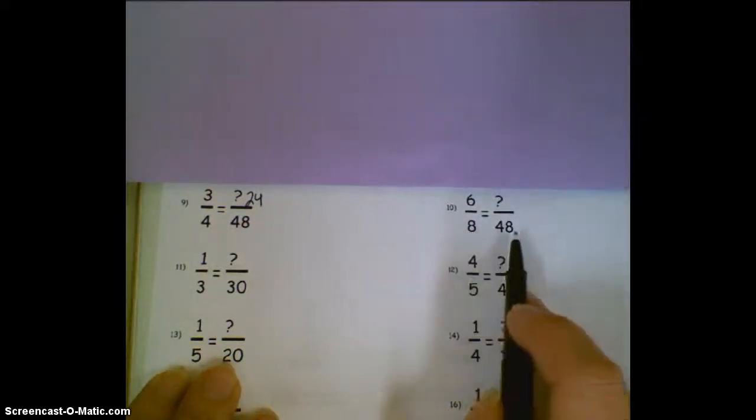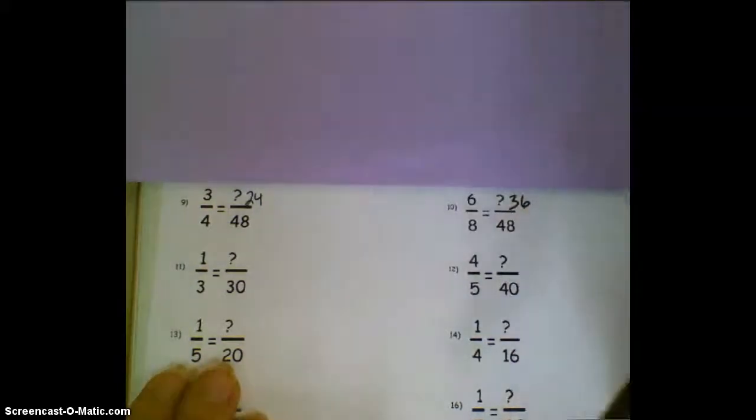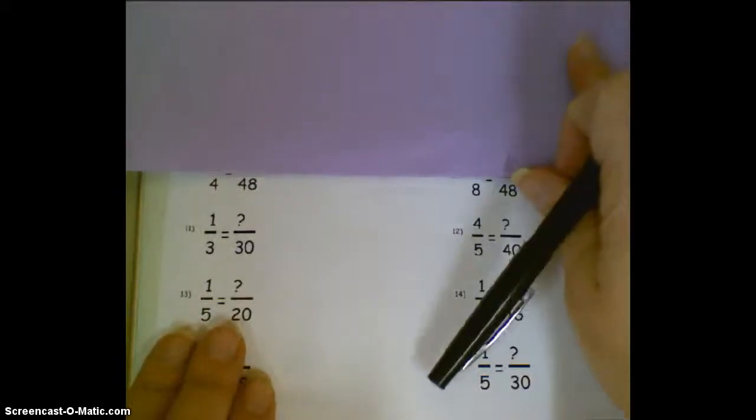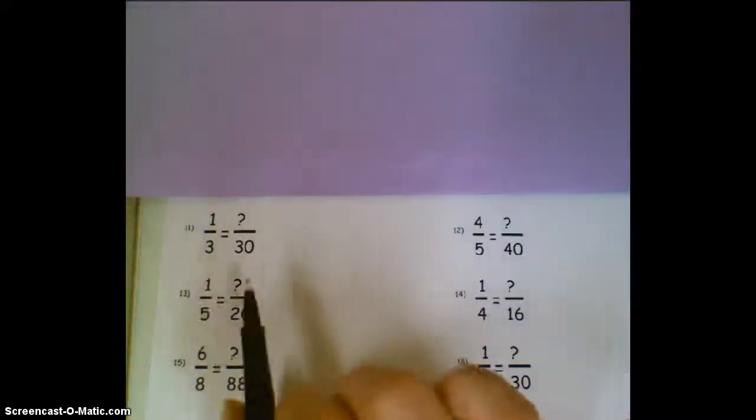8 times 6 is 48, so 6 times 6 is 36. I've got to make sure I'm still on camera here. 3 times 10 is 30, 1 times 10 is 10.